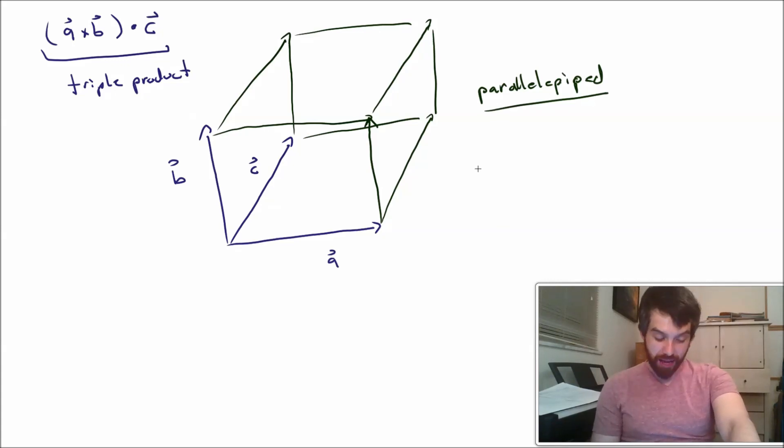And then, as you might guess, the volume is going to be precisely equal, the volume of this parallelepiped, to the triple product, to A cross B dotted with C.